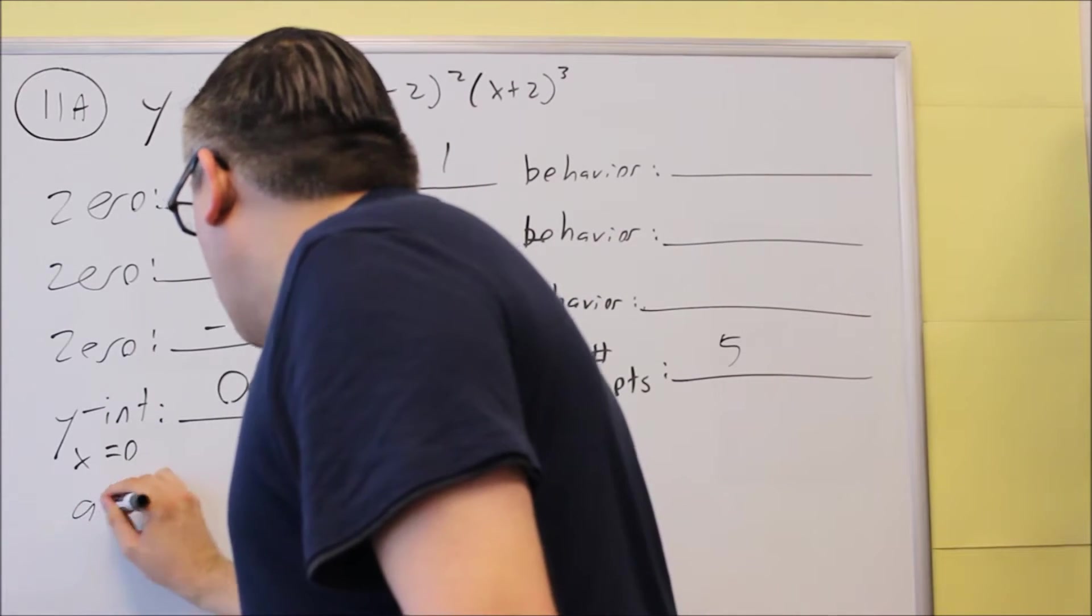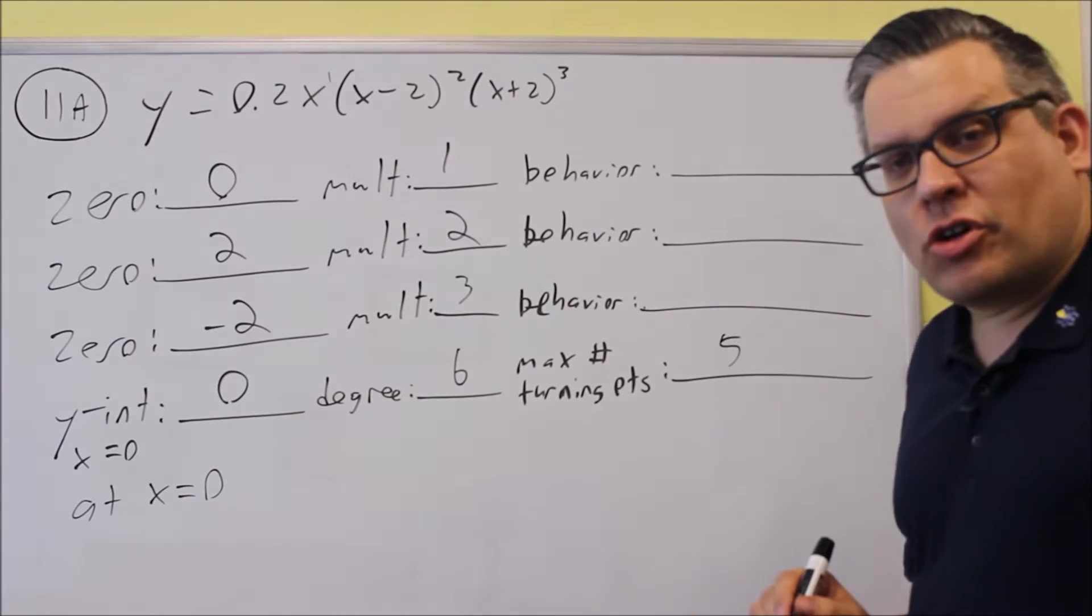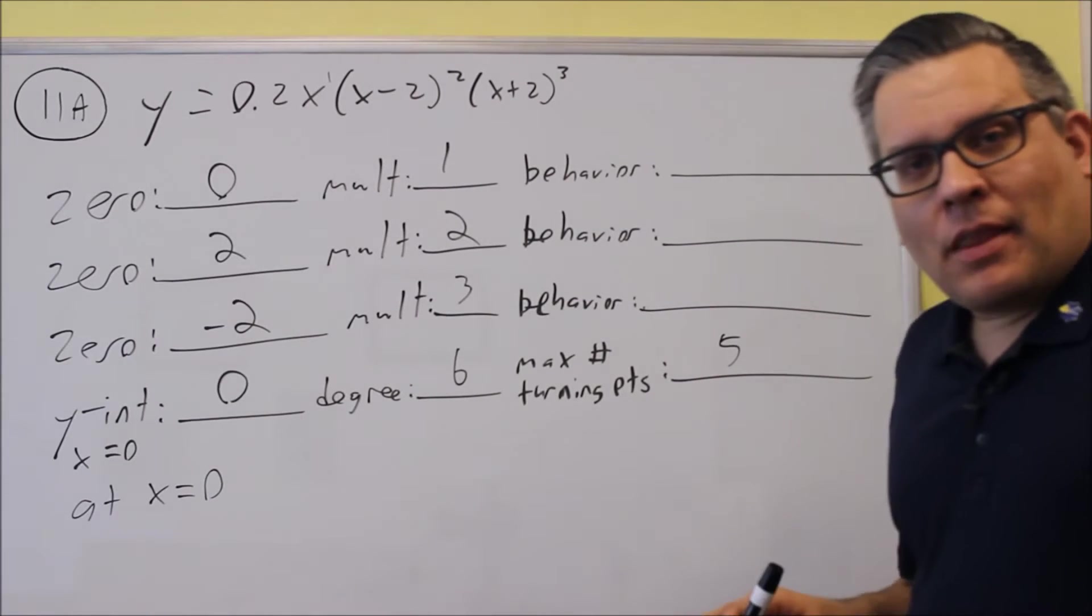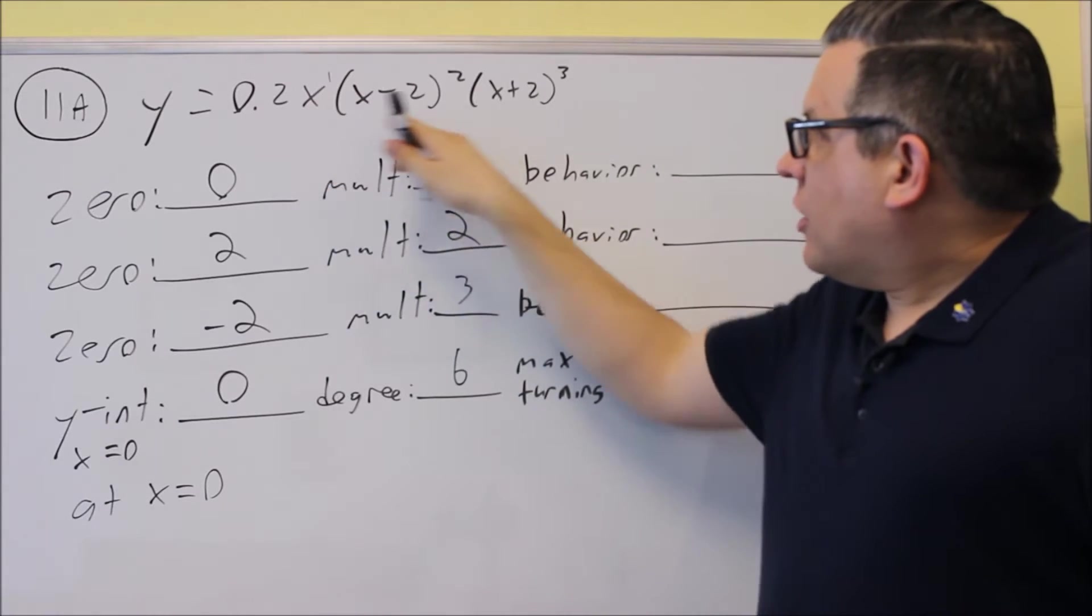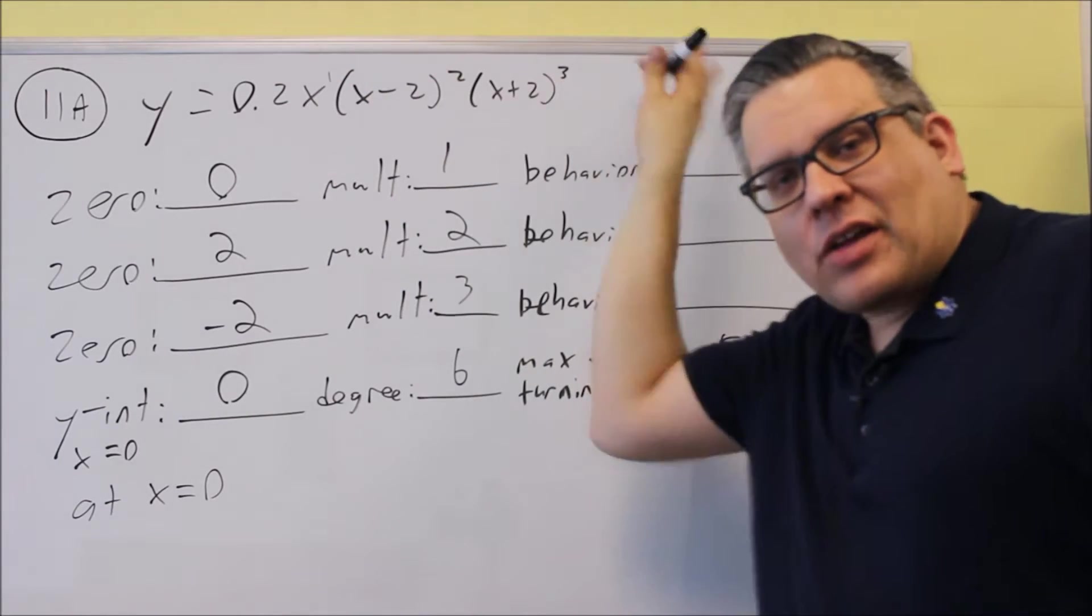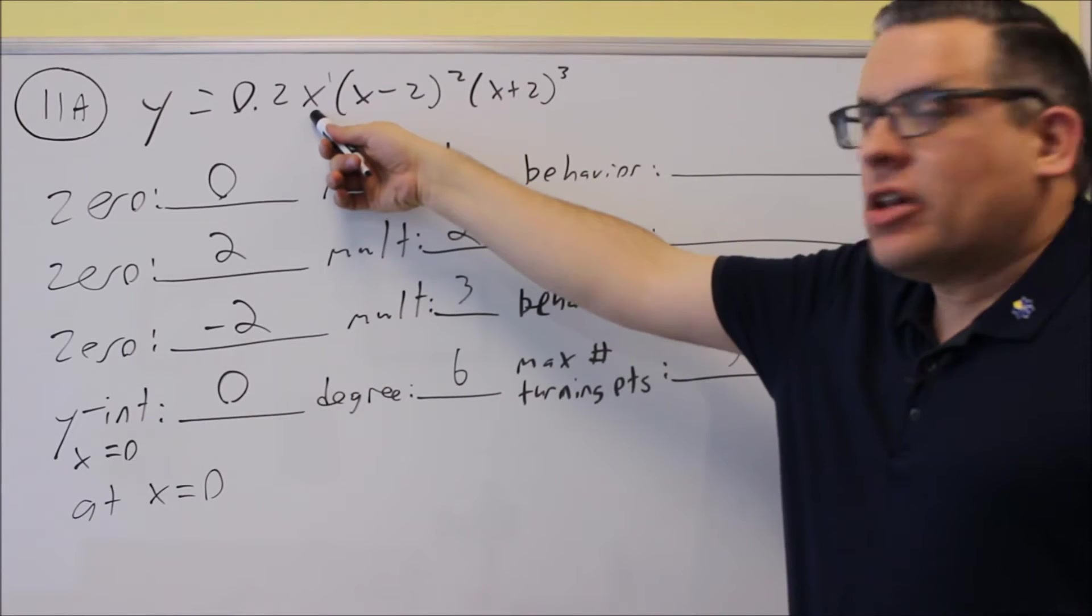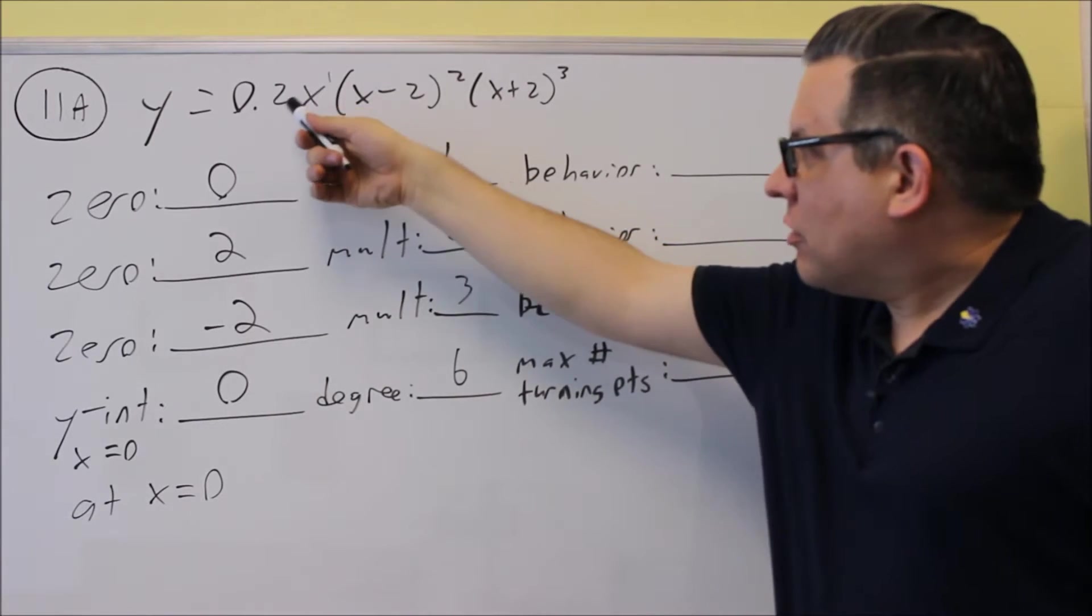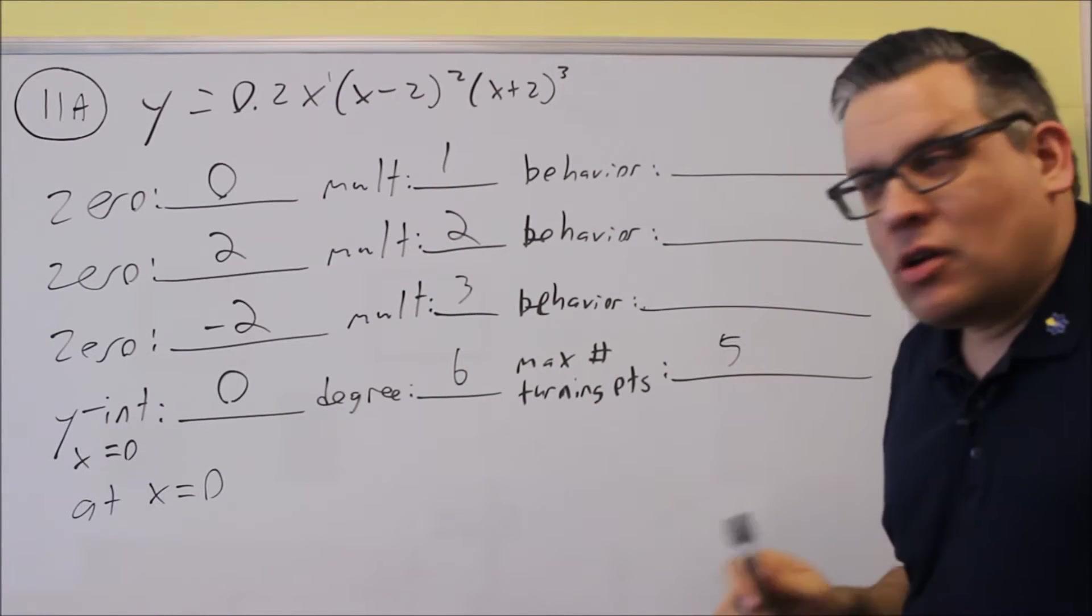We want to do the behavior at x equals zero. Now, the way you do that is you want to put in a zero into all the x's, except for the one that's going to cancel everything out and give you a zero. So I don't want to put a zero in the first x, because if I do, zero times anything is all zero. We did that already with the y-intercept.